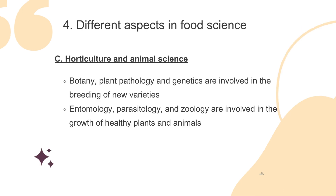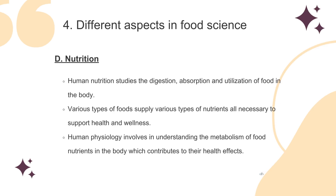The third aspect is horticulture and animal science. It involves botany; plant pathology and genetics are involved in the breeding of new varieties. Entomology, parasitology and zoology are also involved in the growth of healthy plants and animals. The fourth aspect is nutrition. Human nutrition studies the digestion, absorption and utilization of food in the body. Various types of foods supply various nutrients necessary to support health and wellness, while human physiology involves understanding the metabolism of food nutrients in the body and their health effects.